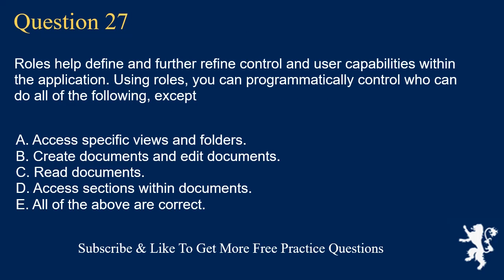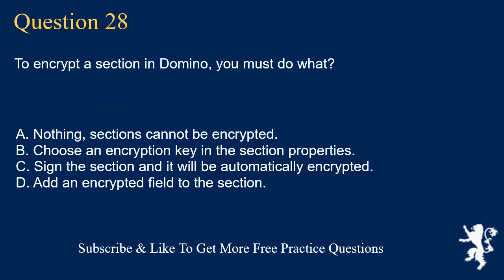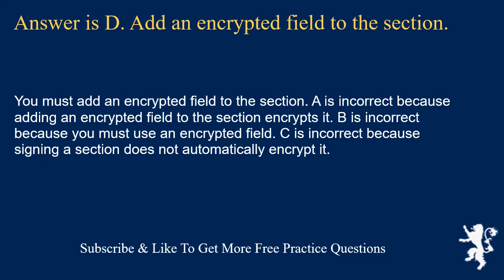Question 27. Roles help define and refine control and user capabilities within the application. Using roles, you can programmatically control who can do all of the following except: Access specific views and folders. Create documents and edit documents. Read documents. Access sections within documents. All of the above are correct. Answer is E: All of the above are correct. Roles can programmatically control who can do all of the options displayed. Question 28. To encrypt a section in Domino, you must do what? Nothing. Sections cannot be encrypted. Choose an encryption key in the section properties. Sign this section and it will be automatically encrypted. Add an encrypted field to the section. Answer is D: Add an encrypted field to the section. You must add an encrypted field to the section. A is incorrect because adding an encrypted field is required. B is incorrect because you must use an encrypted field. C is incorrect because signing a section does not automatically encrypt it.